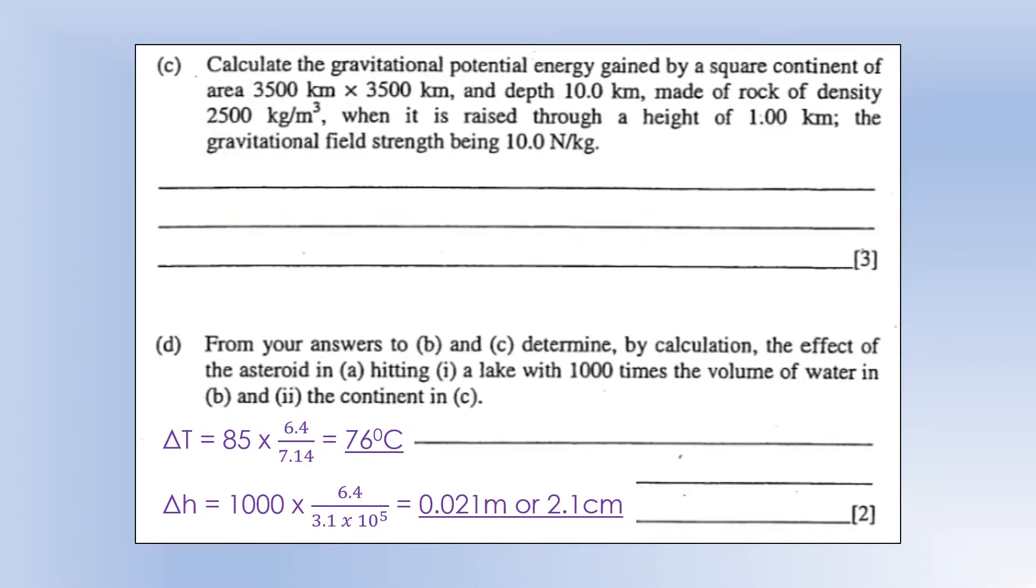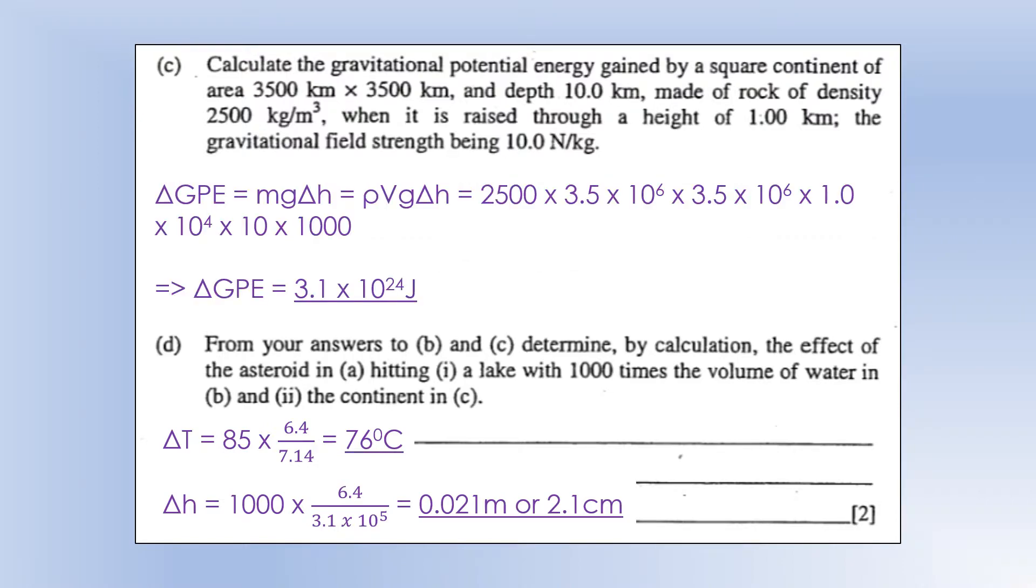Calculate the gravitational potential energy gained by a square continent of area 3,500 kilometres by 3,500 kilometres, and a depth of 10 kilometres. The rock has a density of 2,500 kilograms per metre cubed, and when it's raised to a height of 1 kilometre, the gravitational field strength is 10 newtons per kilogram. To calculate change in GPE, we need to do mgh delta h, and we're going to calculate the mass the same way we did before using density times volume. We need to remember to convert all of these kilometres into metres, so that's 4 of them we need to multiply by 1000, and then we get a very, very big change in GPE of 3.1 times 10 to the 24.